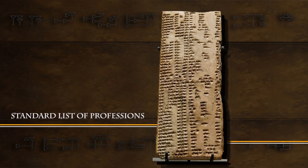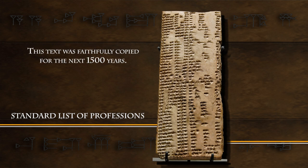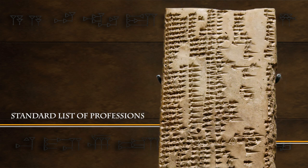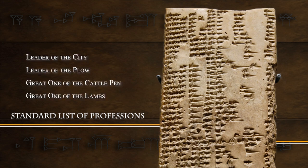The specialization of labor that characterized the establishment of urban life in southern Mesopotamia caused a fundamental restructuring of society. This is particularly evident in a text called The Standard List of Professions. It appeared at the end of the late Uruk period and is amongst the first texts written, faithfully copied for the next fifteen hundred years. Written in several columns, the list provides titles of officials and names of professions ordered in a hierarchy starting with the highest rank. The titles include such terms as Leader of the City, Leader of the Plow, Great One of the Cattle Pen, and Great One of the Lambs. The list contains terms for priests, gardeners, cooks, smiths, jewelers, potters, and others. It is clear that it provides an inventory of specialist professions within the cities.